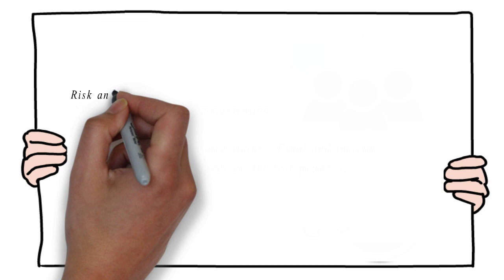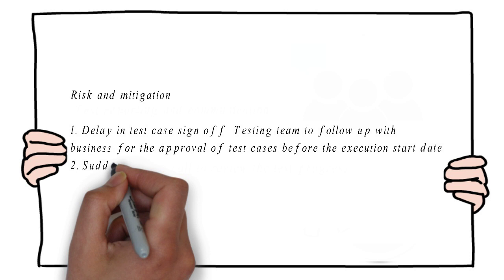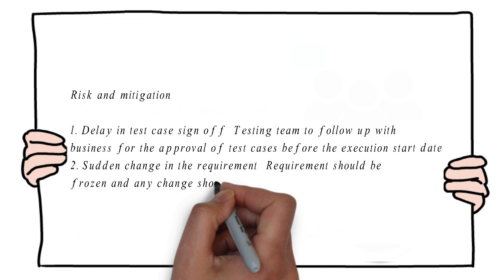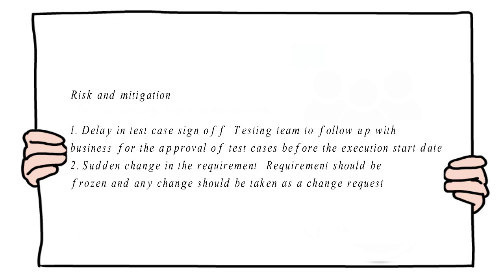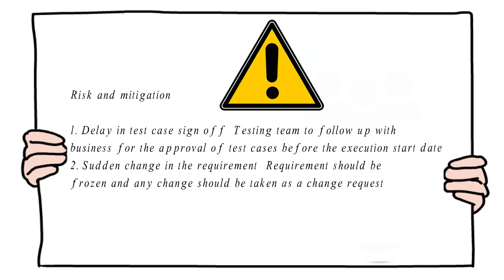The final component is risk and mitigation. There can be many risks associated with the project and they need to be mitigated efficiently. For example, one risk can be a delay in test case sign-off, and the mitigation can be the testing team following up with business for approval of test cases before execution starts. Another risk can be a sudden change in requirements, and the mitigation can be that requirements should be frozen and any change should be taken as a change request. All such risks need to be listed in the test plan with their mitigation plans.